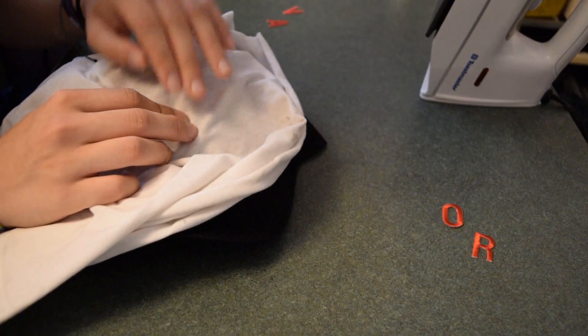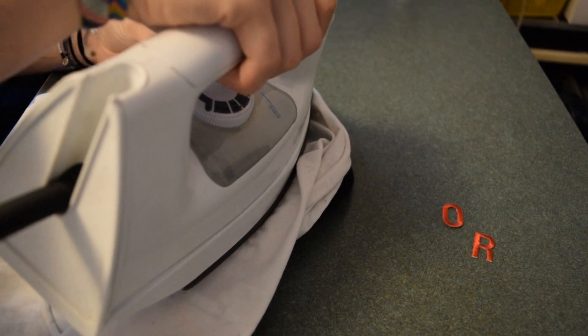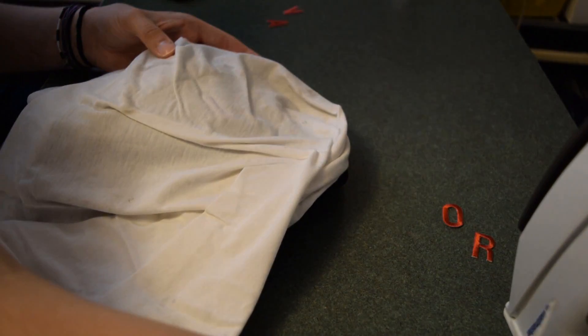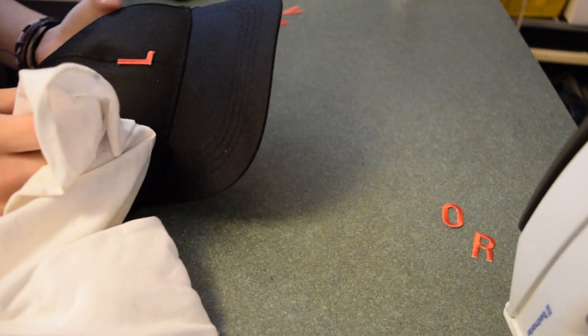I used part of an old t-shirt to iron over, in order to make sure the letters were not damaged by the iron. I held the iron for 20 to 30 seconds per letter. You may need to go over the letters again until all corners are adequately sealed to the hat.